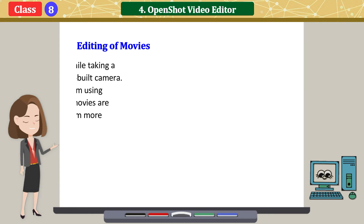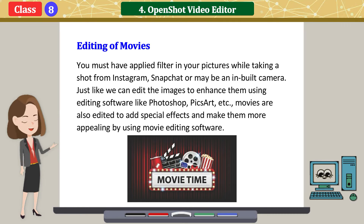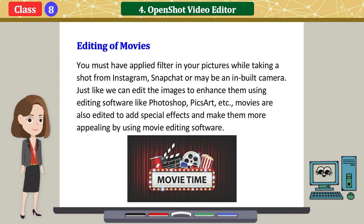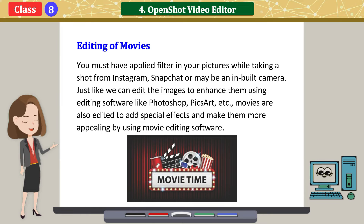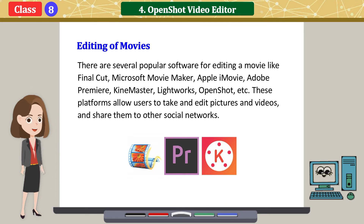Editing of movies — you must have applied filters in your pictures while taking a shot from Instagram, Snapchat, or maybe an inbuilt camera. Just like we can edit images to enhance them using editing software like Photoshop, Pixar, etc., movies are also edited to add special effects and make them more appealing by using movie editing software. There are several popular software for editing a movie like Final Cut, Microsoft Movie Maker, Apple iMovie, Adobe Premiere, KindMaster, Lightworks, OpenShot, etc. These platforms allow users to take and edit pictures and videos and share them to other social networks.